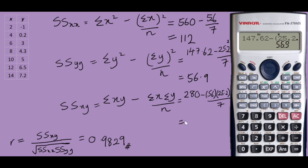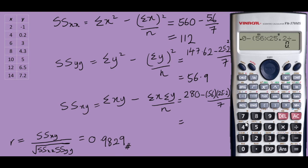To find the sum of squares of xy — SSxy — take 280 minus 56 multiplied by 25.2 divided by 7, and this gives us 78.4.